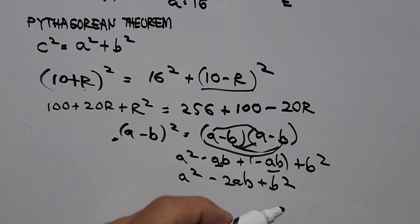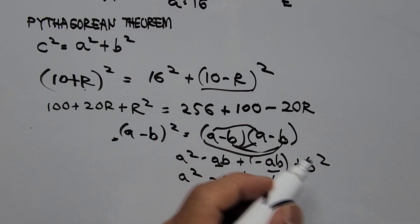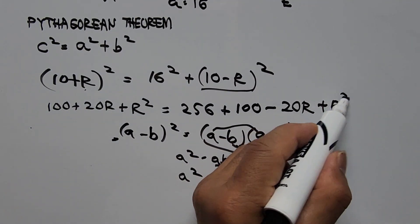B squared is R squared. Negative R squared, that will be positive R squared. So that's plus R squared.